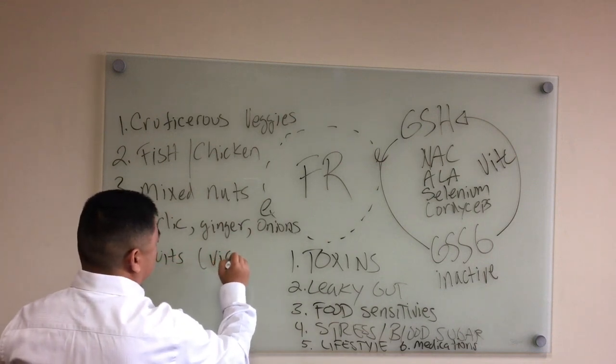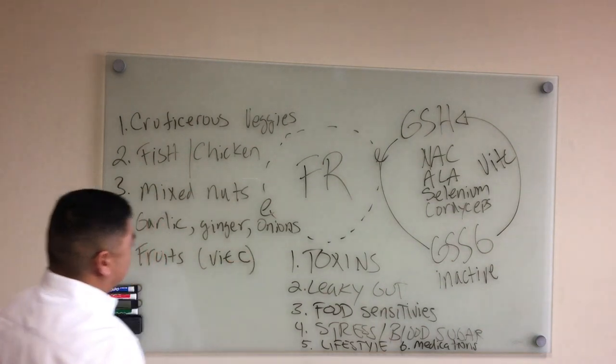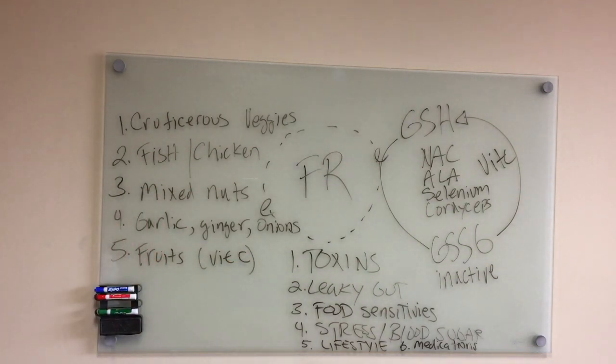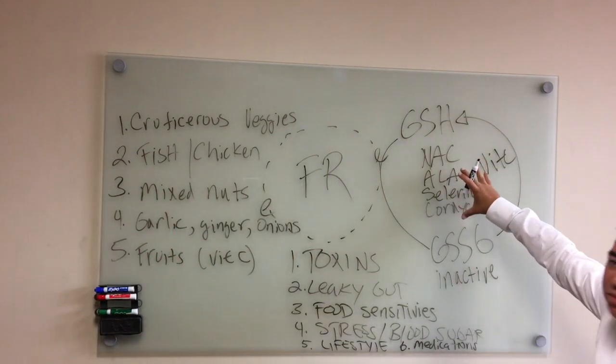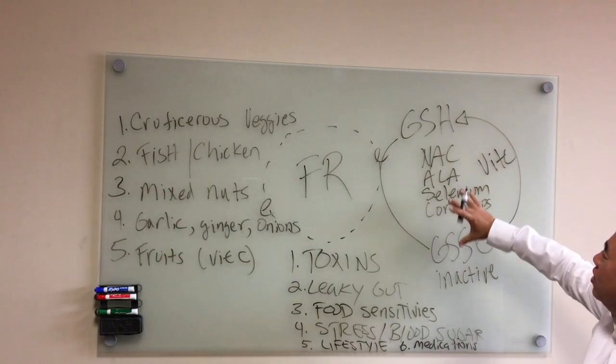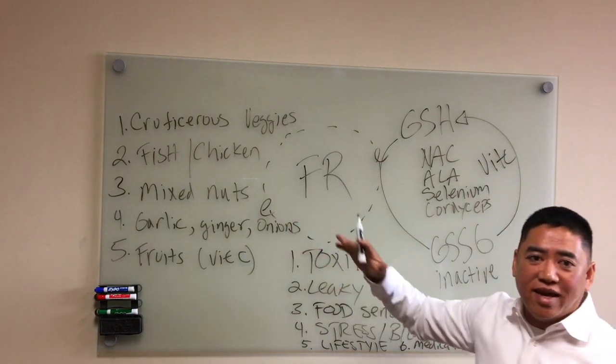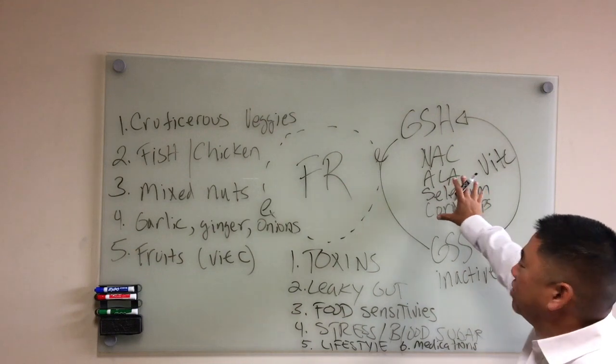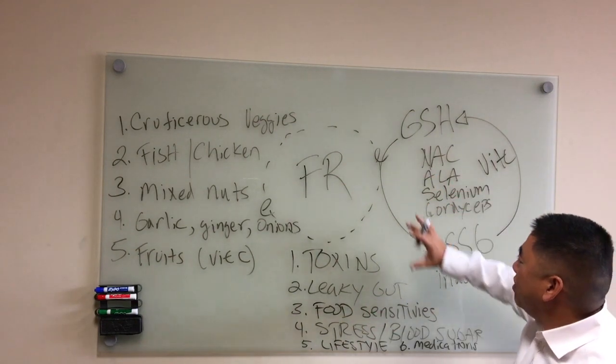Number five, fruits rich in vitamin C. All of this is basically this. Now some people, even with this in their diet, they need that extra boost, and so we have to supplement with this. We have an actual supplement that has all of these nutrients, it's called glutathione recycler.